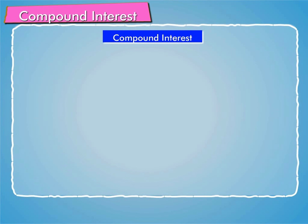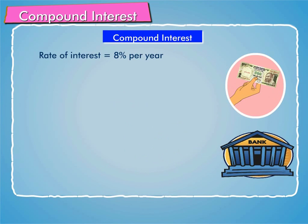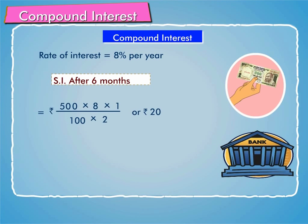Let us now learn about compound interest. Suppose you deposit Rs. 500 in a bank and the rate of interest is 8% per year. Since interest is added half yearly in banks, after 6 months, the simple interest will be Rs. 500 into 8 into 1 by 100 into 2, or Rs. 20.